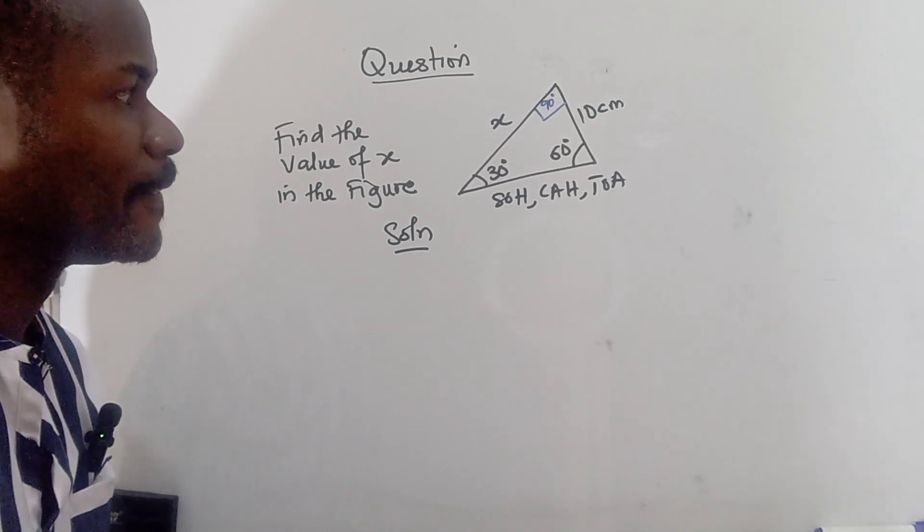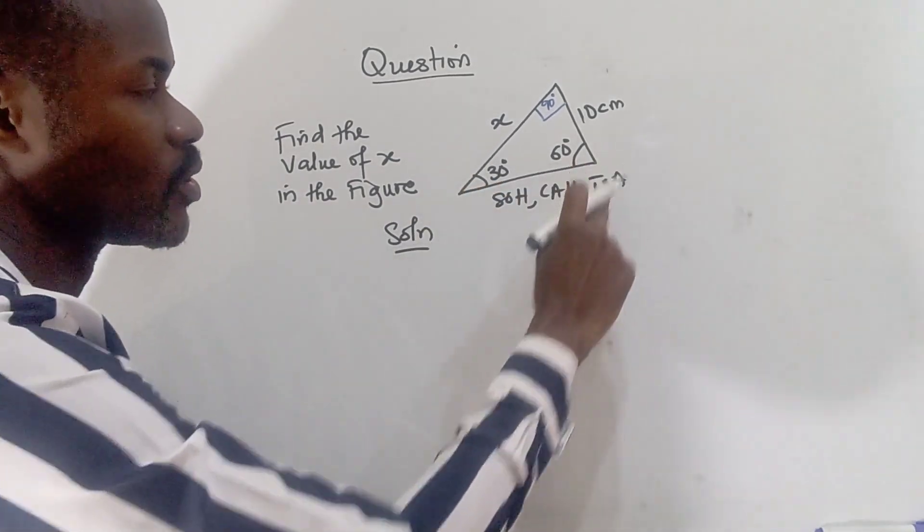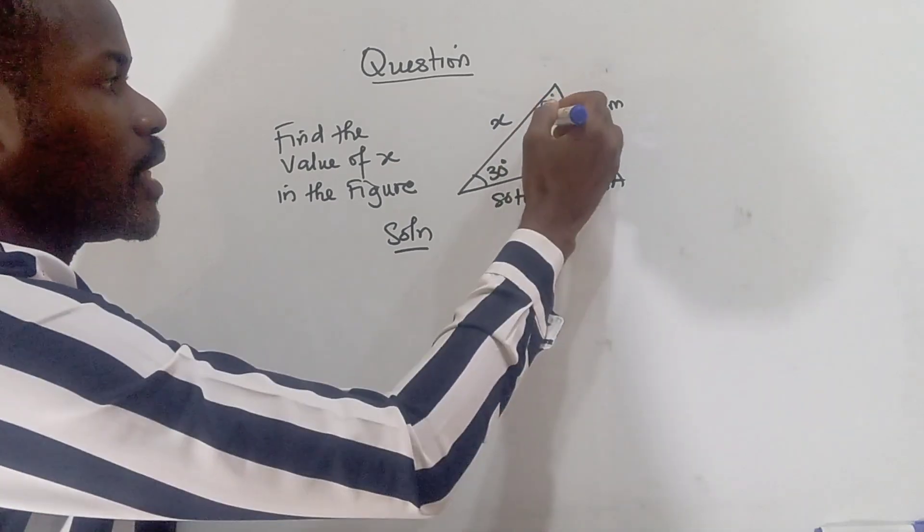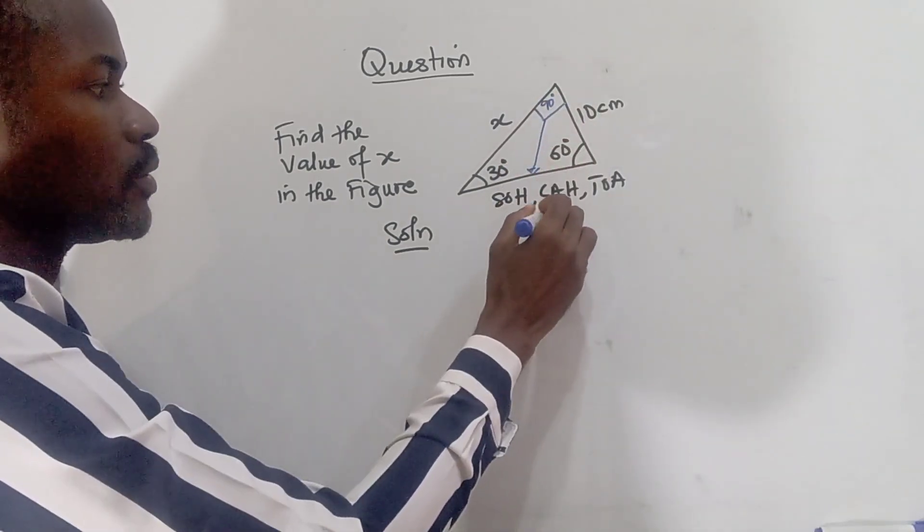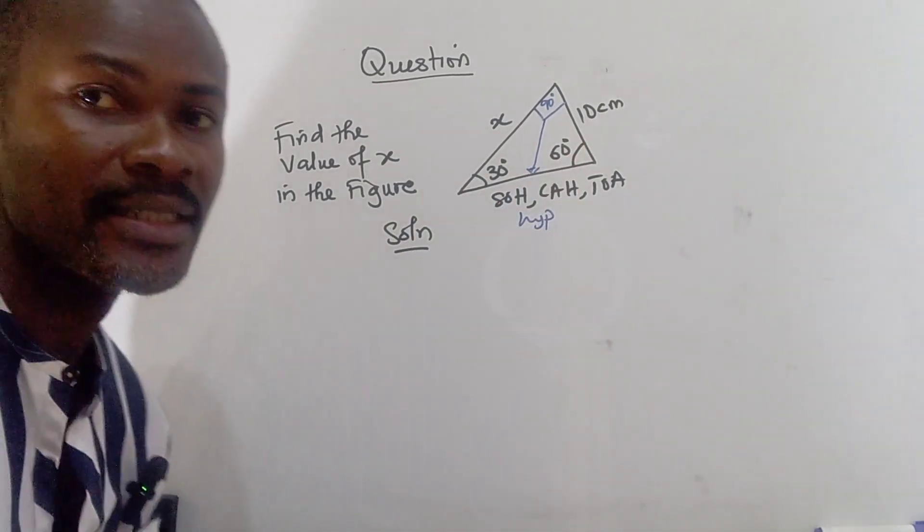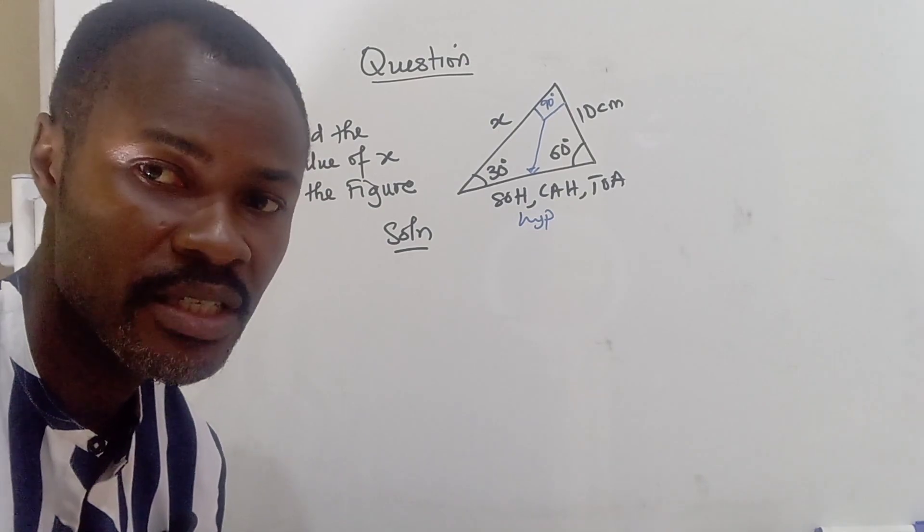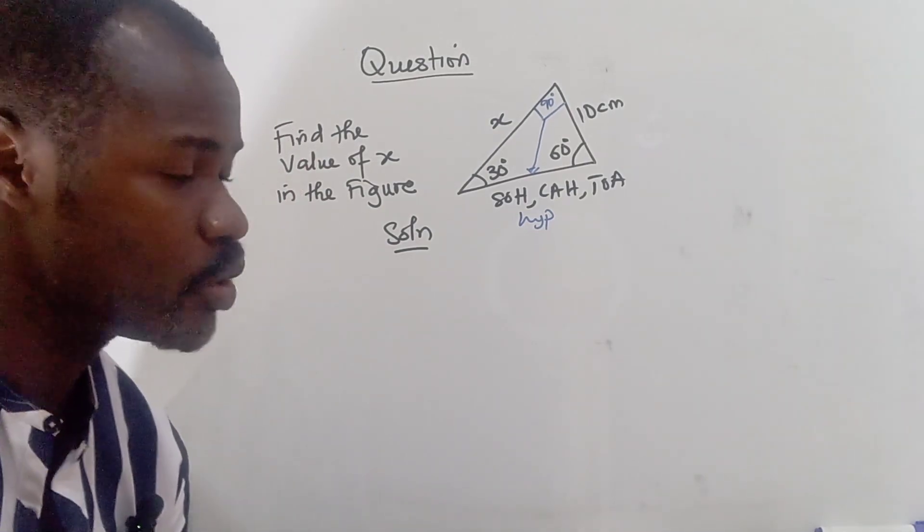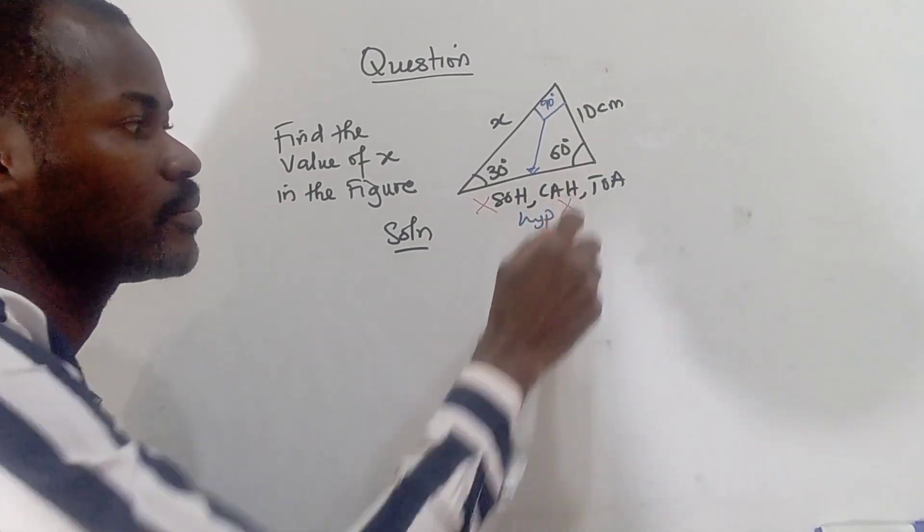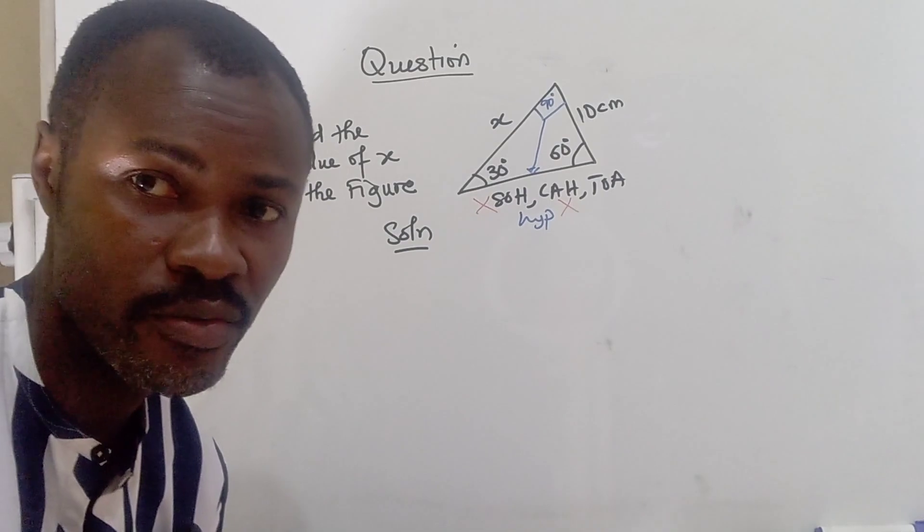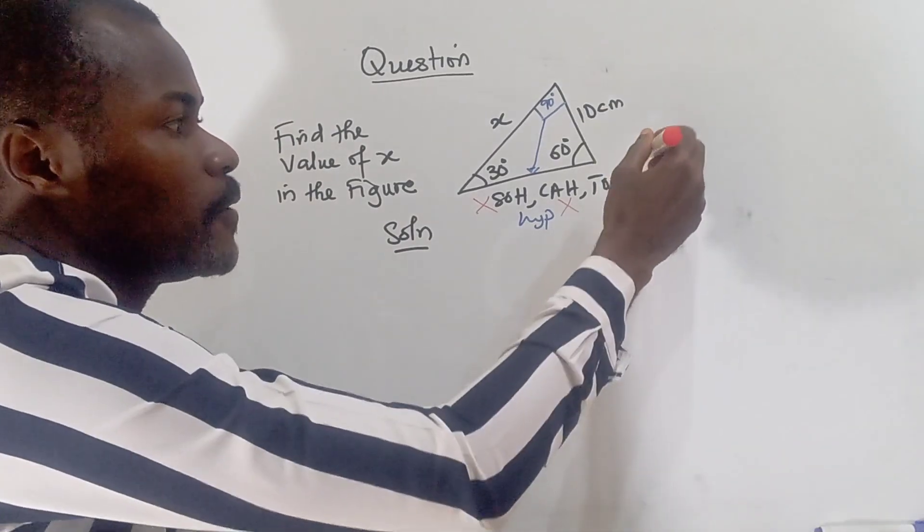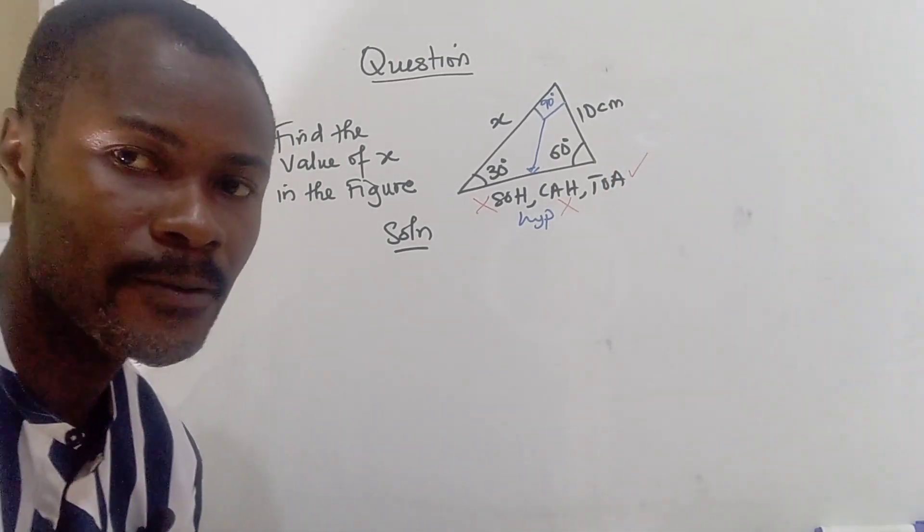we can see that this part of the triangle is our hypotenuse. So since this part is our hypotenuse, and it has no given length, it means it is not going to be useful. So it means we cannot use cos or cah, because we don't have a given value for the hypotenuse. So it means what we are going to use is TOA. So I'll quickly use TOA to solve it.